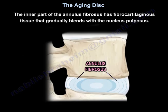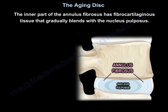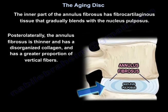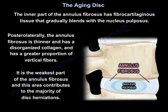The inner part of the annulus has fibrocartilaginous tissue that gradually blends with the nucleus pulposus. Posterolaterally, the annulus is thinner, has disorganized collagen, and has a greater proportion of vertical fibers. This is the weakest part of the annulus, and this area contributes to the majority of disc herniations.